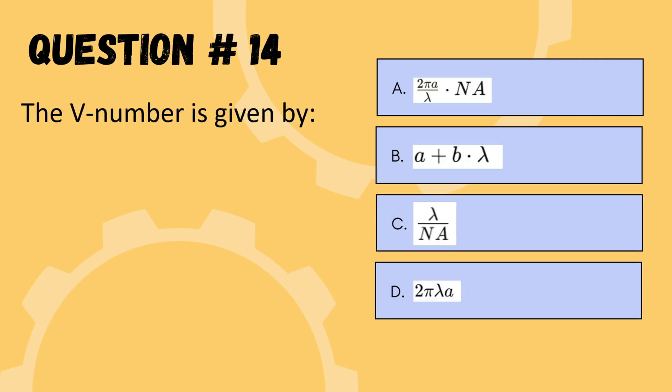Next question: the V number is given by — options are (2πa/λ)·NA, (a + b)·λ, λ/NA, or 2πλa. The correct option is A: V = (2πa/λ)·NA.